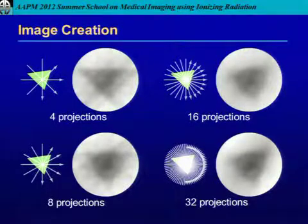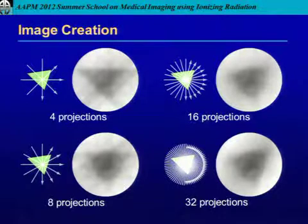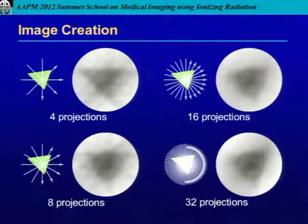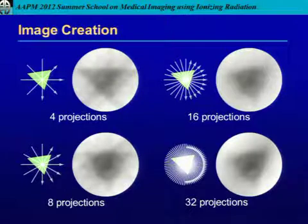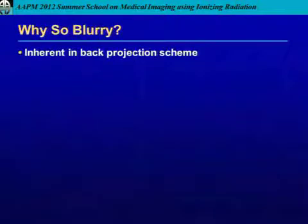This was all drawn by an unprofessional artist — me — so there's a lot of alignment error introduced. But one thing that's clear as the image builds up is that it's getting blurry. Why is it getting so blurry? It turns out that this blurriness is inherent in the back projection scheme.